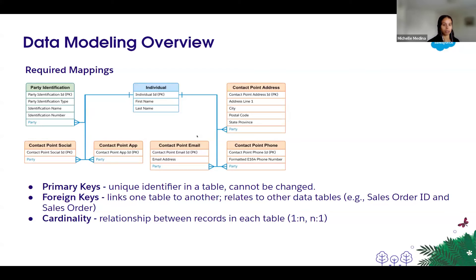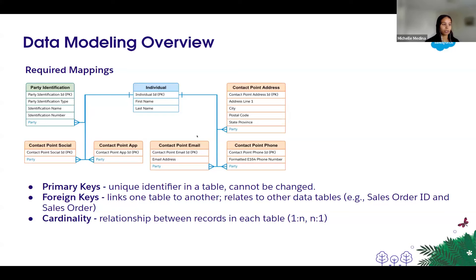If you want to collect a person's attributes and use them to unify and recognize multiple profiles and link those profiles together, you'll want to map to this individual data model object. These attributes normally represent things like first name, last name — you'll need some sort of unique identifier for the individual. The fields in this diagram are the minimum required fields that have to be mapped in order to use them in identity resolution.